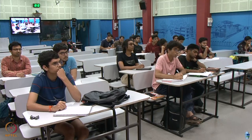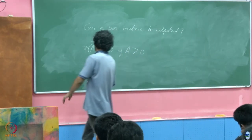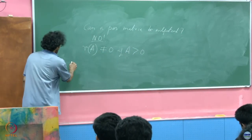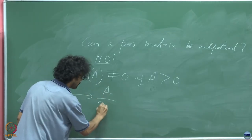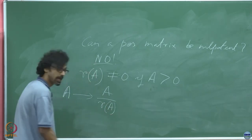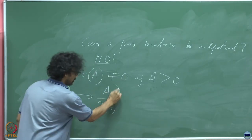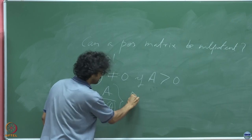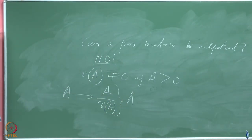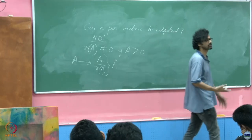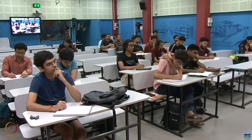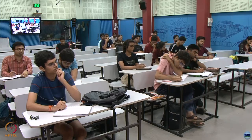By definition, the spectral radius is positive. So hereafter, given A, we can just convert it to A upon r(A), so that we call this object Â, and we are assured that the spectral radius of Â is unity.